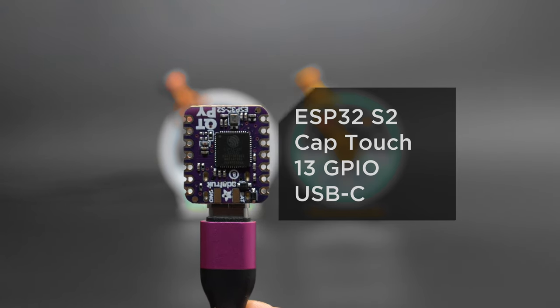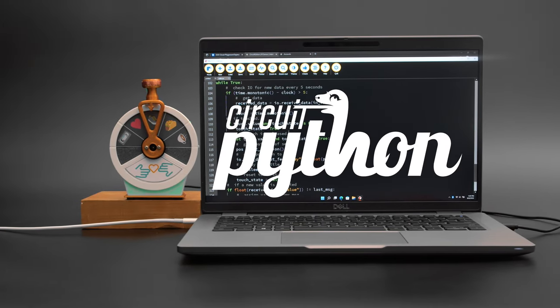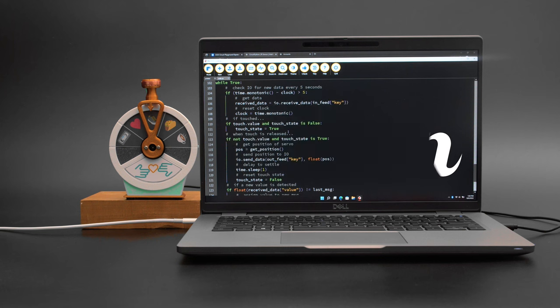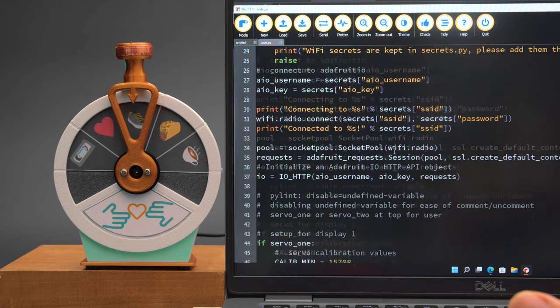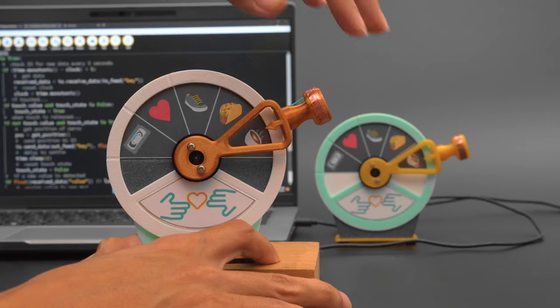The Circuit Python code runs on two different dev boards and uses Adafruit IO for sending data between the two. The analog feedback servos are calibrated and record the position of the servo when it detects the handle has been touched. When touch input is released, the position of the servo is sent to a feed.